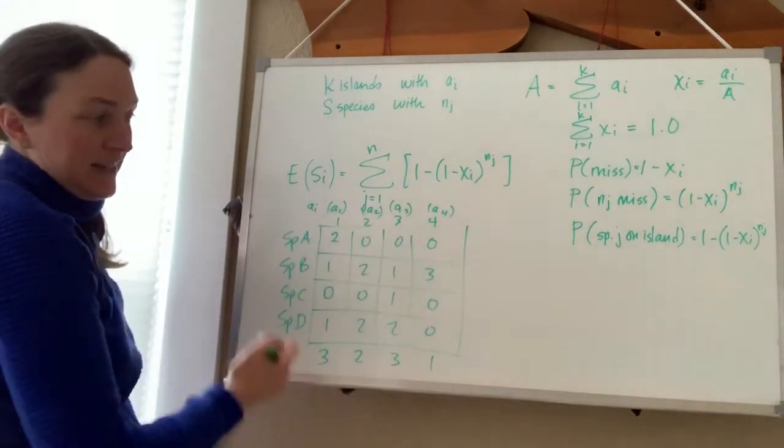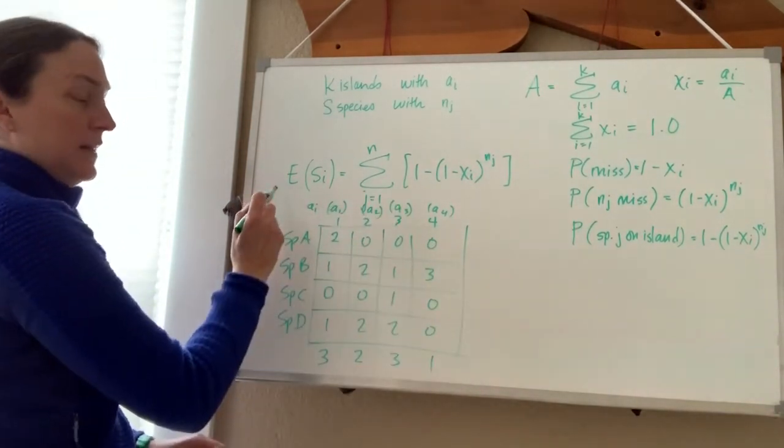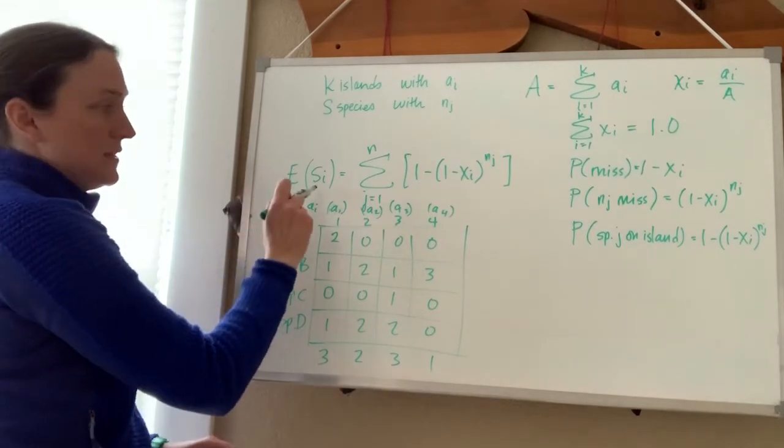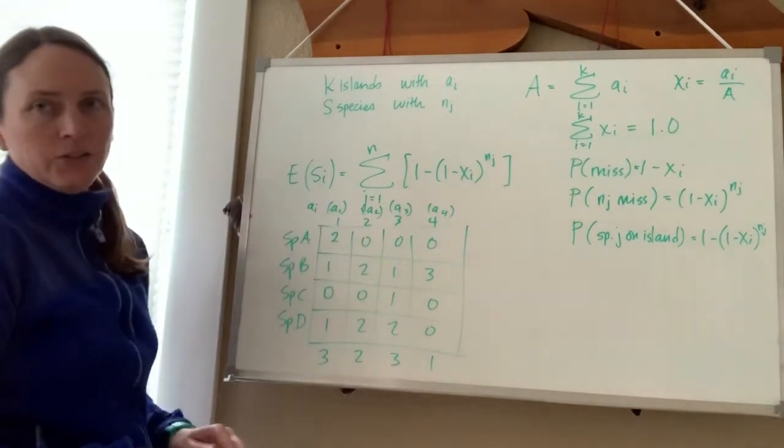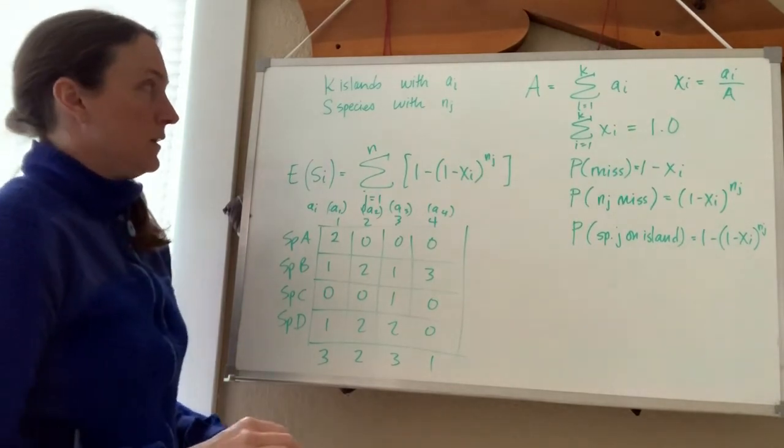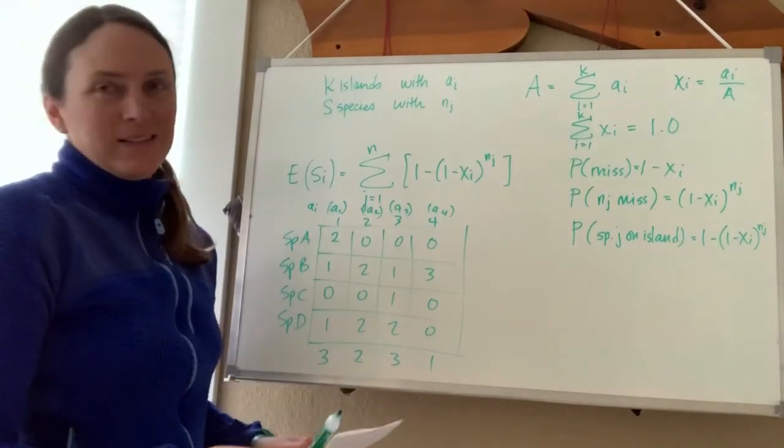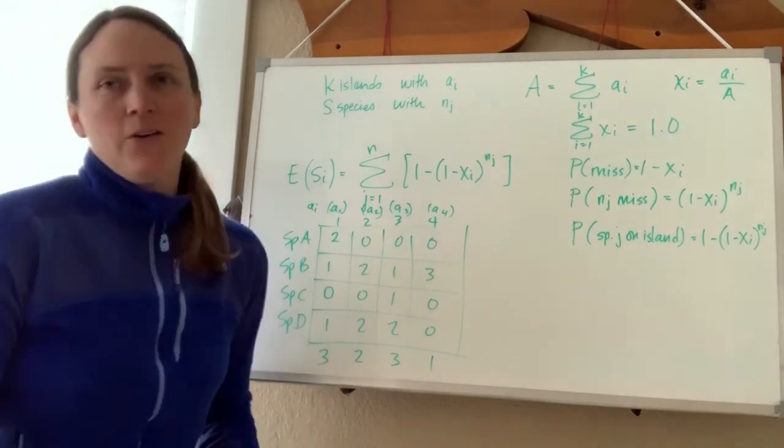So if you had a data set like this, you could calculate the expected species richness on each of these islands and then compare it to the true species richness. So that's the passive sampling model for island biogeography.